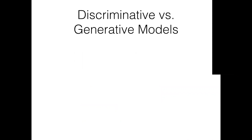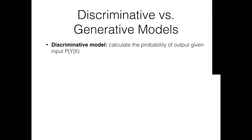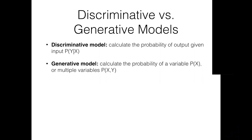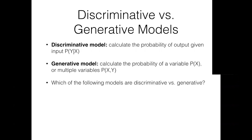Before we get into the latent variable models, I want to first stress the differences between discriminative models versus generative models. Discriminative models calculate the conditional probability P(y|x). Generative models calculate the probability of the observed data x, or model the joint probability over both observed data x and the label y. The CNN classifier you implemented in assignment one is a typical discriminative model, and the generative adversarial network you just learned is a generative model.